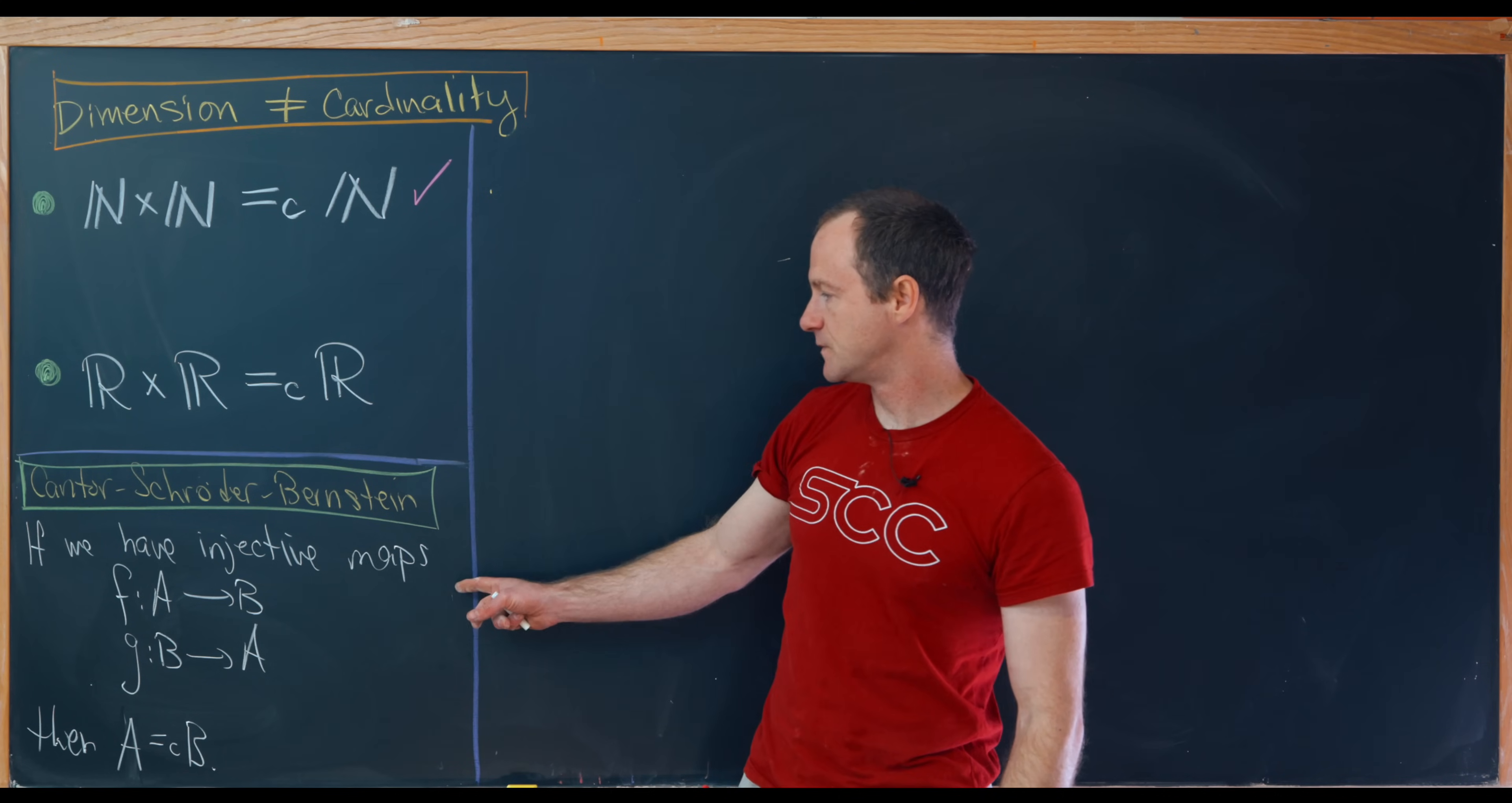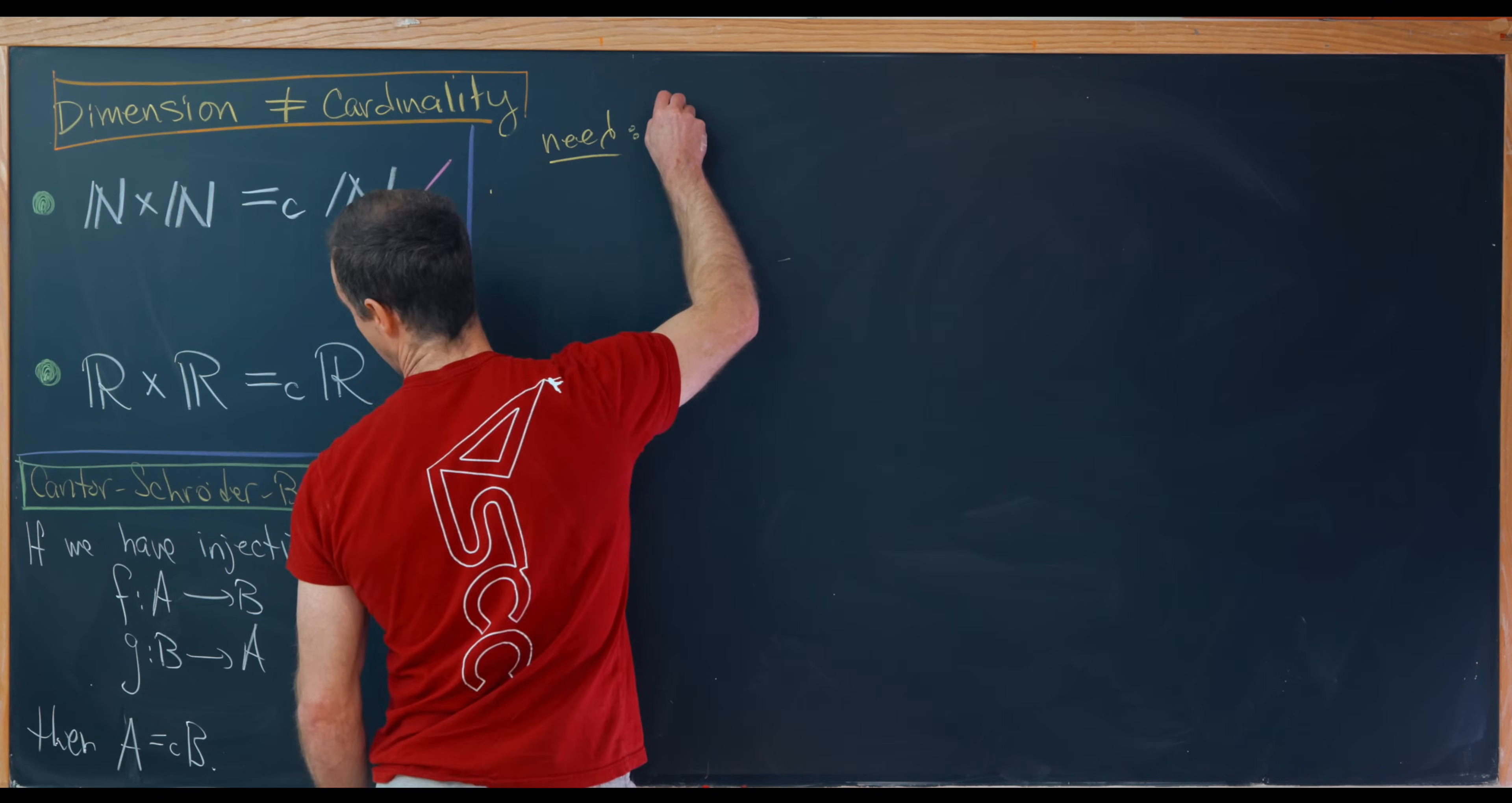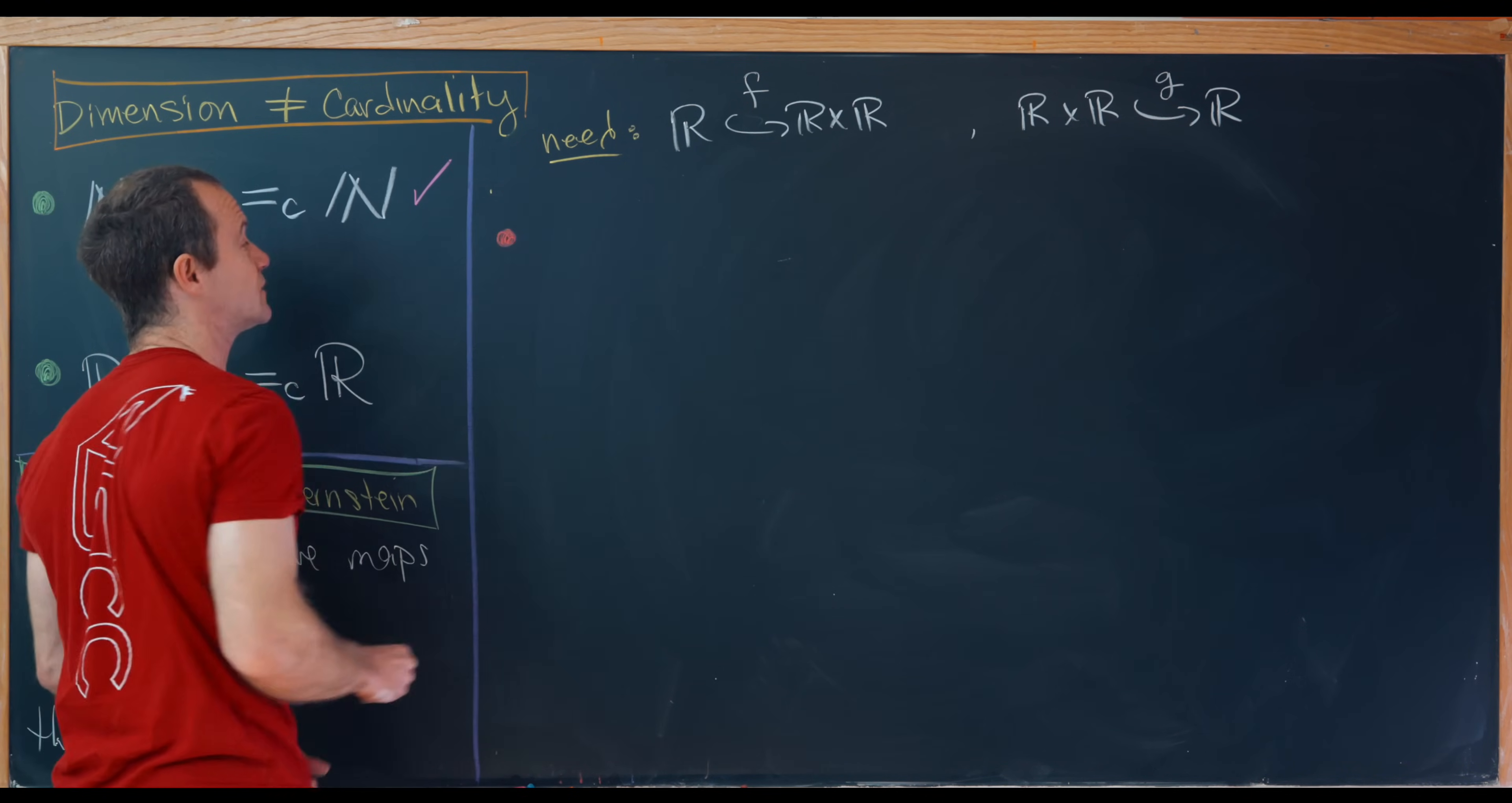Okay, so now back into this example. So the Cantor-Schroeder-Bernstein theorem says that if we have two injective maps, one from A to B and another one from B to A, then in fact we have a bijection from A to B, or in other words A and B are equinumerous or equal in cardinality. So using this theorem, all we really need is to find two injective maps. One injective map will go from R to R cross R, and then we'll need another injective map from R cross R into R. Let's maybe label each of these with a name. Let's say this one is F and this one is G.